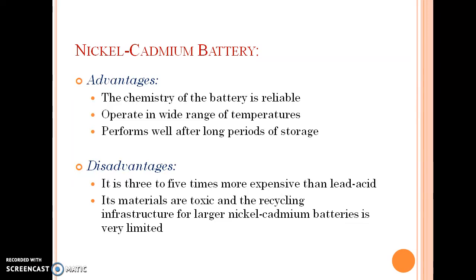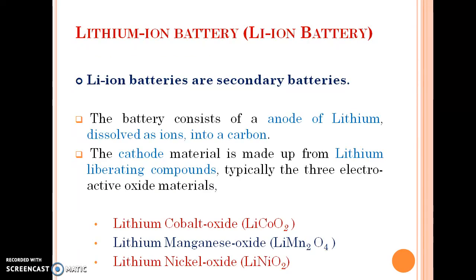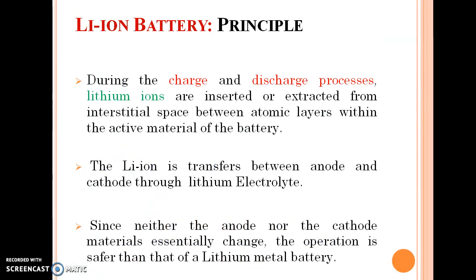Another widely used secondary cell is the lithium-ion battery. This battery consists of a lithium anode dissolved as ions into carbon. The cathode material is made up of a lithium-liberating compound; typically three electroactive oxide materials are used: lithium cobalt oxide, lithium manganese oxide, and lithium nickel oxide. During the charge and discharge process, lithium ions are inserted or extracted from interstitial spaces between atomic layers within the active materials of the battery.